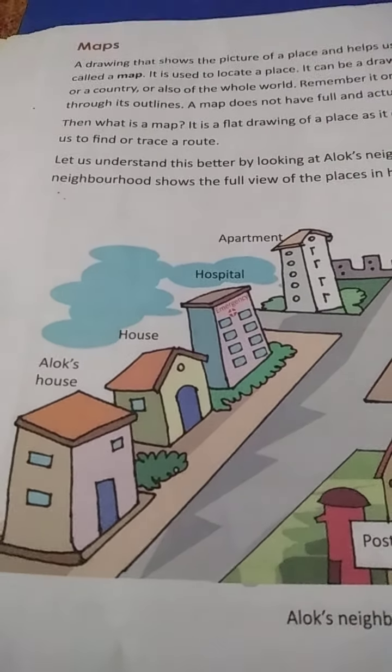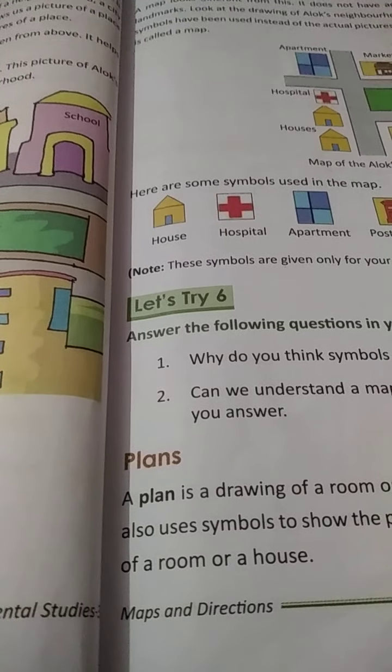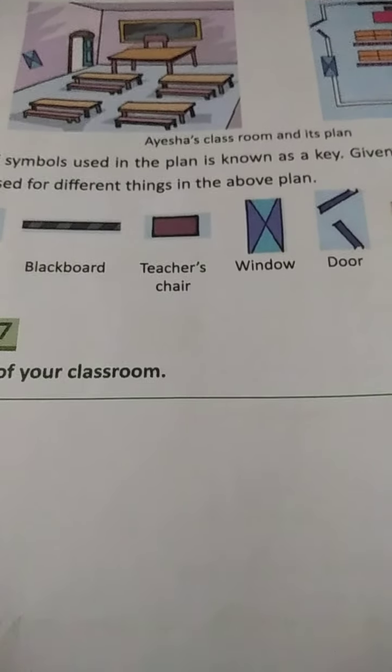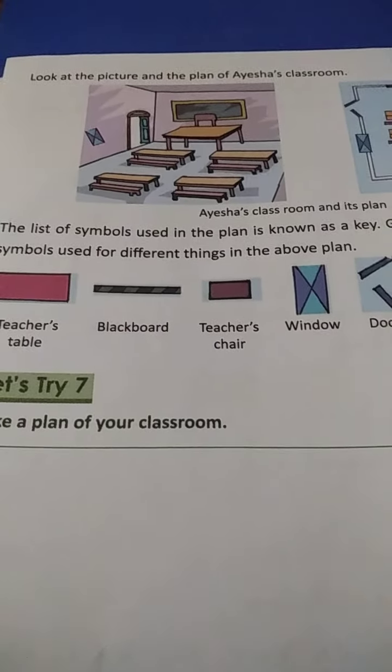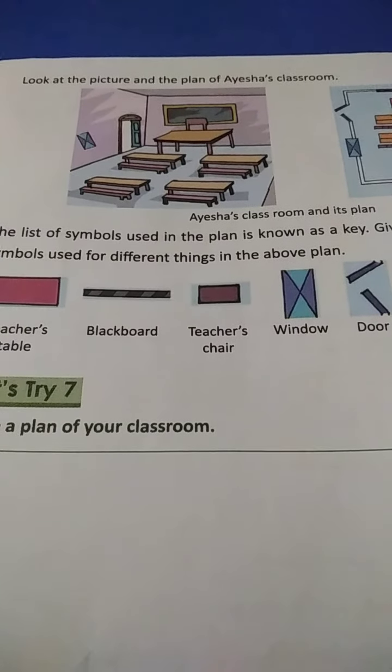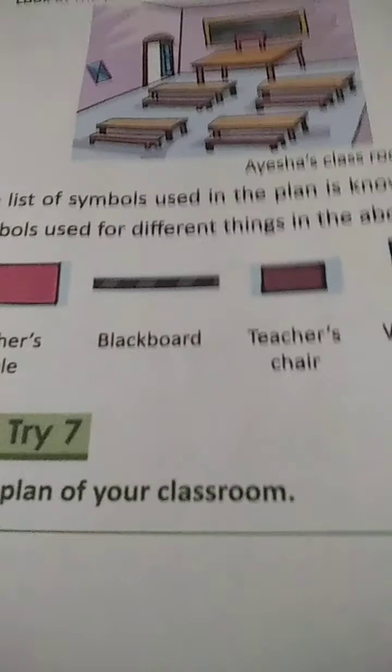Now we will discuss the next topic: Plans. A plan is a sketch of a place made by viewing it from the top. It makes it easy for us to locate houses. A plan is a drawing of a room or a house. It also uses symbols to show the places of doors, windows, furniture, and many other parts of a room or a house.